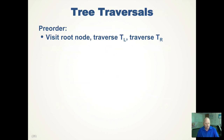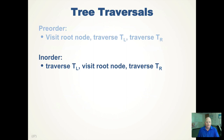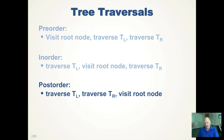There are different ways to traverse or move through a binary tree. Pre-order traversal: visit the root node, then recursively traverse the left subtree, then recursively traverse the right subtree. In-order: traverse the left subtree, visit the root, then traverse the right subtree. Post-order: traverse left, traverse right, then finally visit the root. So in pre-order you visit the node first; in-order you visit it between the two traversals; in post-order you visit it last.